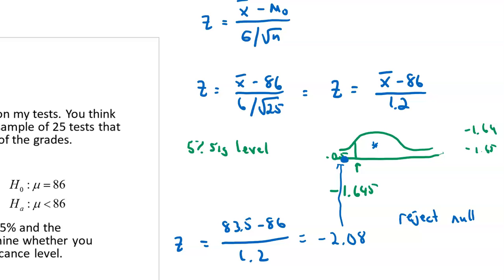That critical value of negative 1.645 came as a result of our significance level. If I wanted a significance level of 0.01, that would push me a little further to the left. If I wanted a 10% significance level, that would push me a little farther to the right.